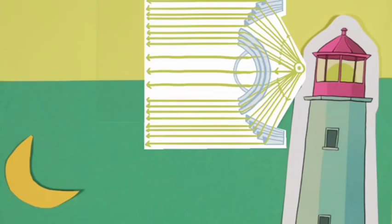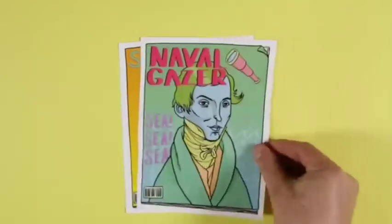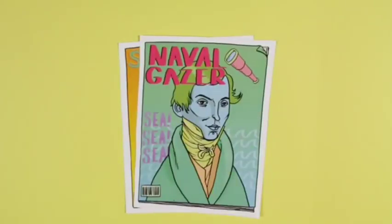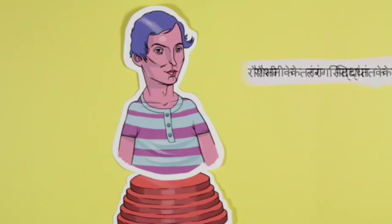रोशनी एक तरंग के रूप में होती है, यह सिद्धांत बताने के कारण फ्रेनल वैज्ञानिकों में तो मशहूर हुए, पर साथ ही जहाजों के कप्तानों के बीच भी उन्होंने बहुत सम्मान पाया। बचपन में पढ़ाई में पीछे रहने वाला यह बच्चा, जो उम्र के आठवें साल तक पढ़ नहीं पाता था, वही आज रोशनी के तरंग सिद्धांत का पिता माना जाता है।